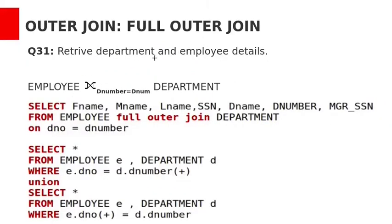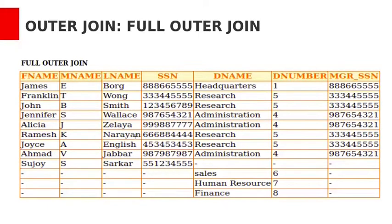Let's see the full outer join query to retrieve department and employee details. The relational algebra query is: employee FULL OUTER JOIN department ON dnum = dnumber. The equivalent SQL query is: SELECT FName, MName, LName, SSN, DName, DNumber, MGR_SSN FROM employee FULL OUTER JOIN department ON dnum = dnumber.